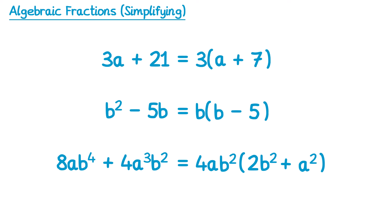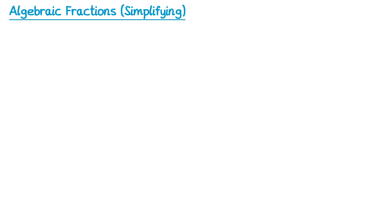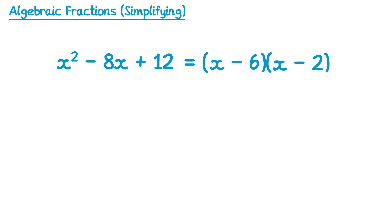Now there's also some double bracket factorisations. If we take this quadratic expression here, you should recognise that we can factorise this into two brackets. You need to look for a pair of numbers that multiply to make 12, but add to make negative 8. For this one it would be negative 6 and negative 2, so the brackets would be x subtract 6, x subtract 2.